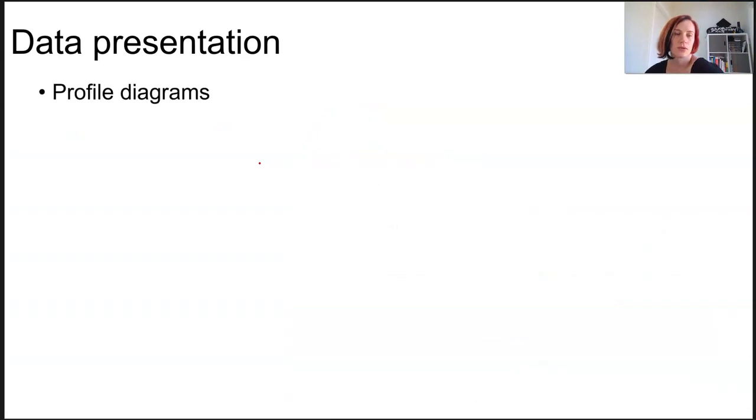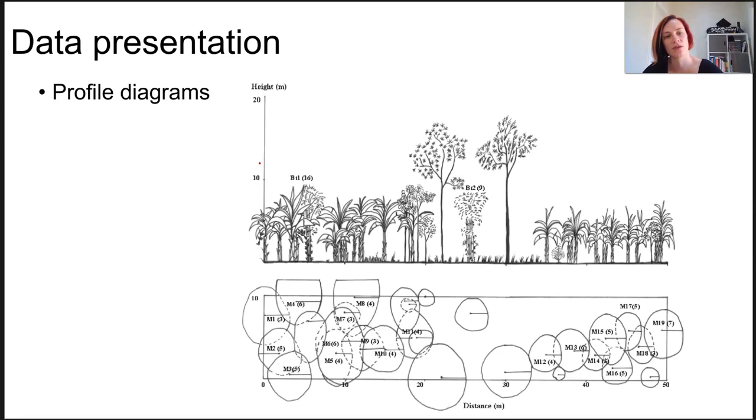Profile diagrams are scale drawings of a profile or a side view. It's also called an elevation and it looks at the vegetation and the land shape along a particular area. They show both the shape of the land and the horizontal strata of vegetation. It's really important that scale is done properly here.